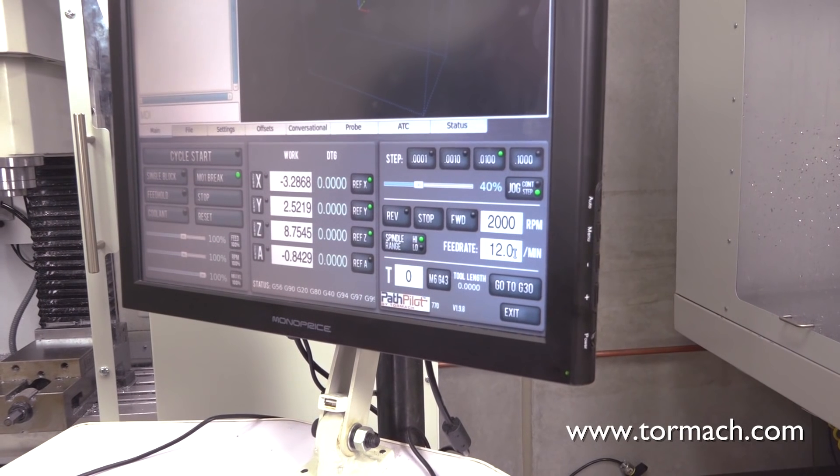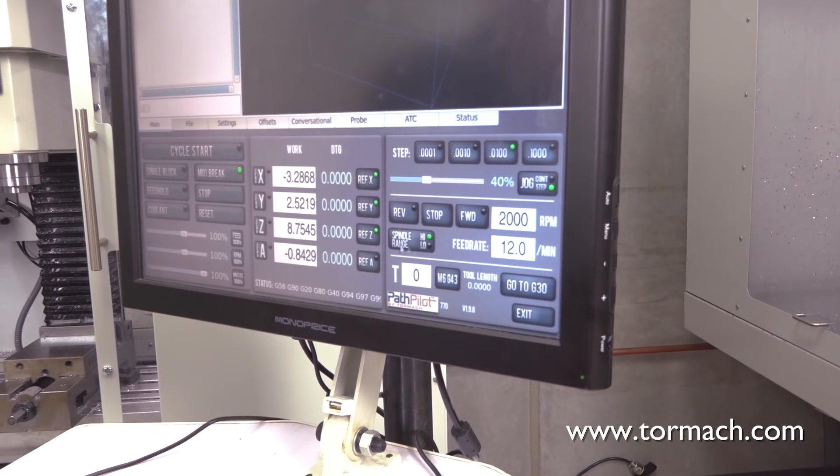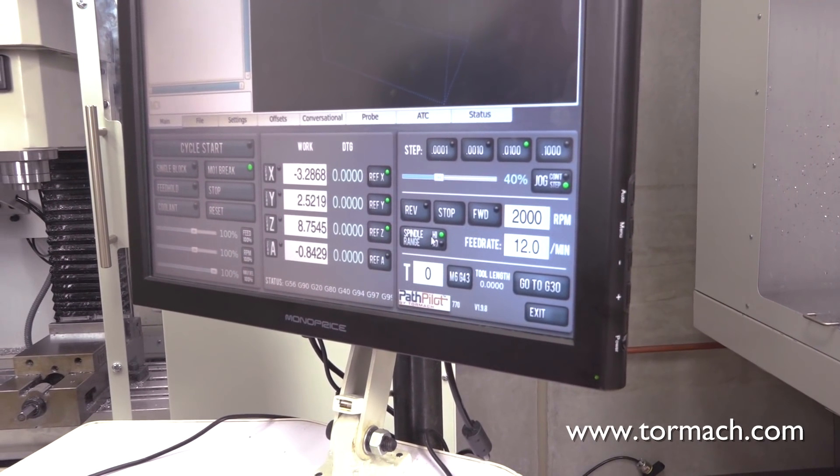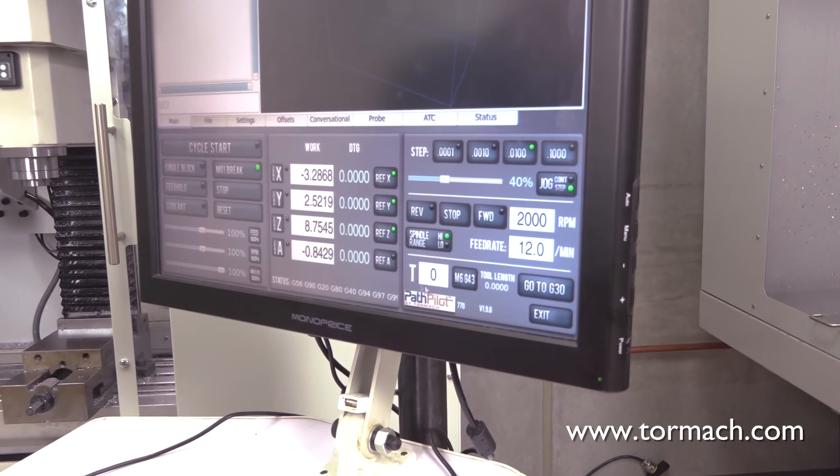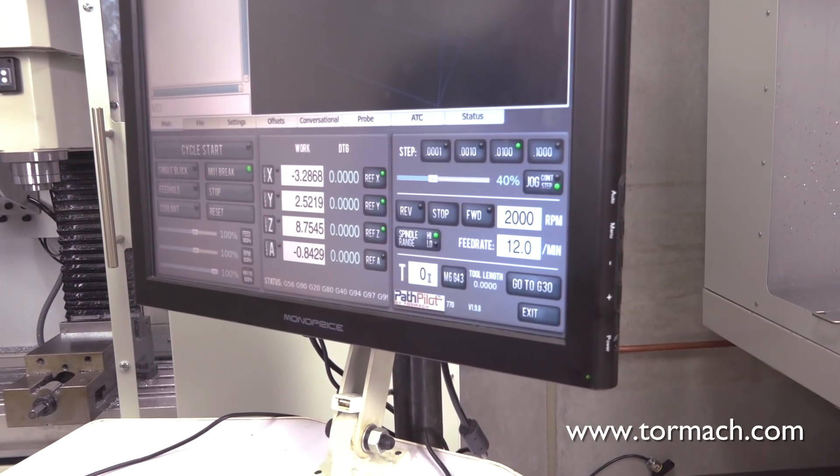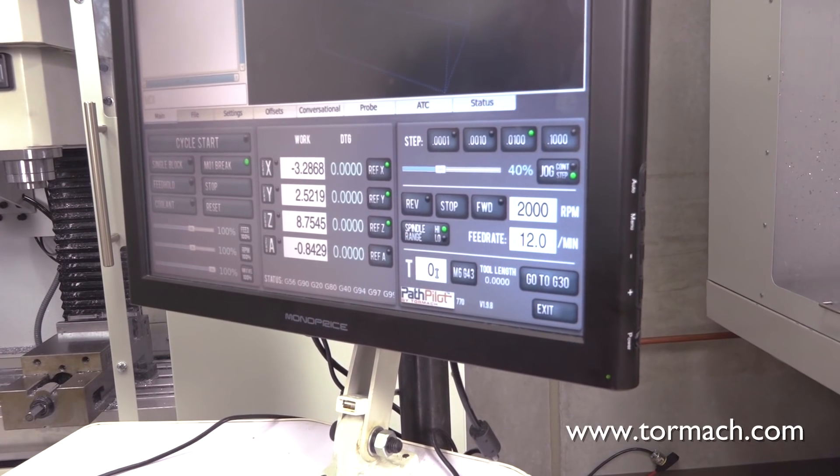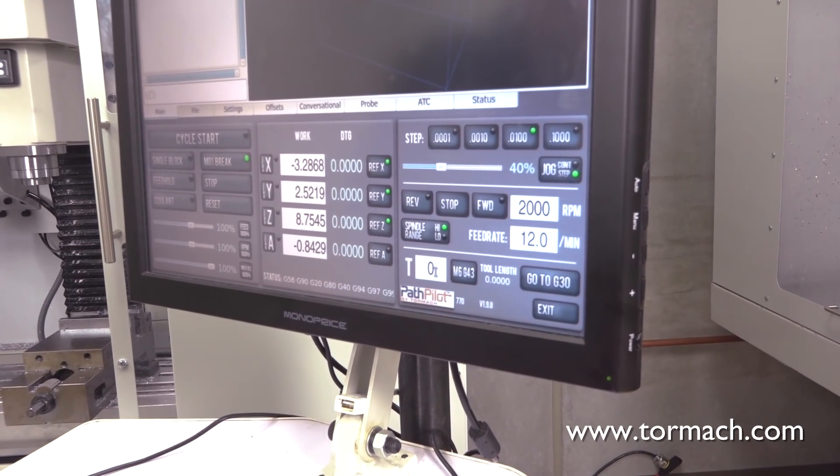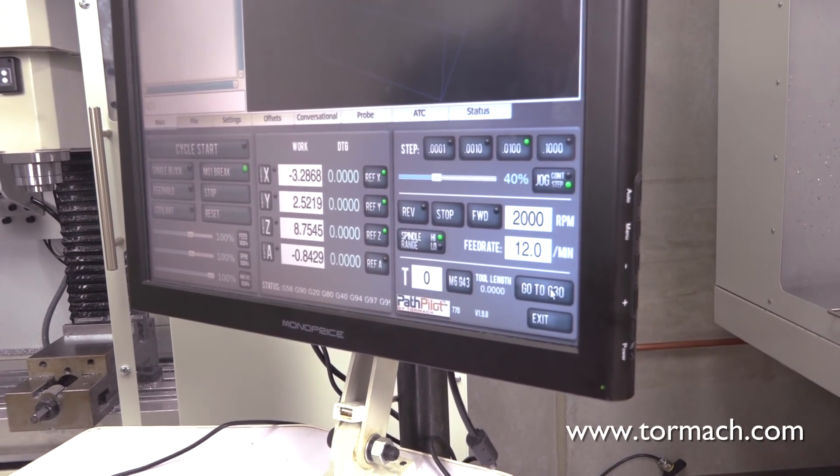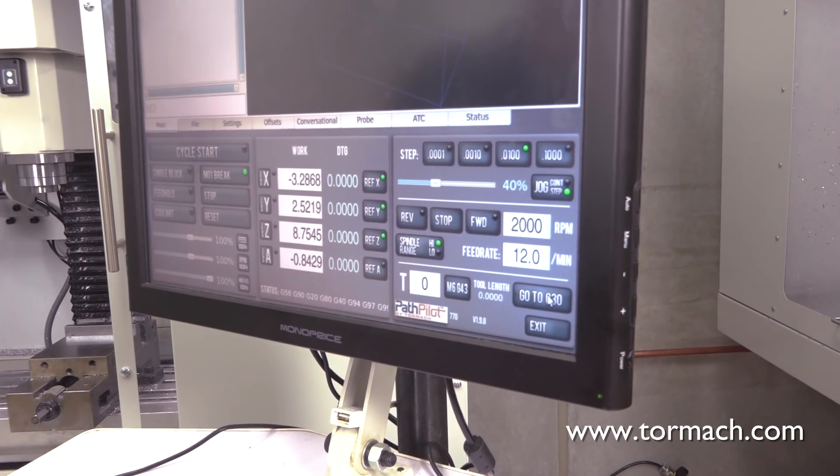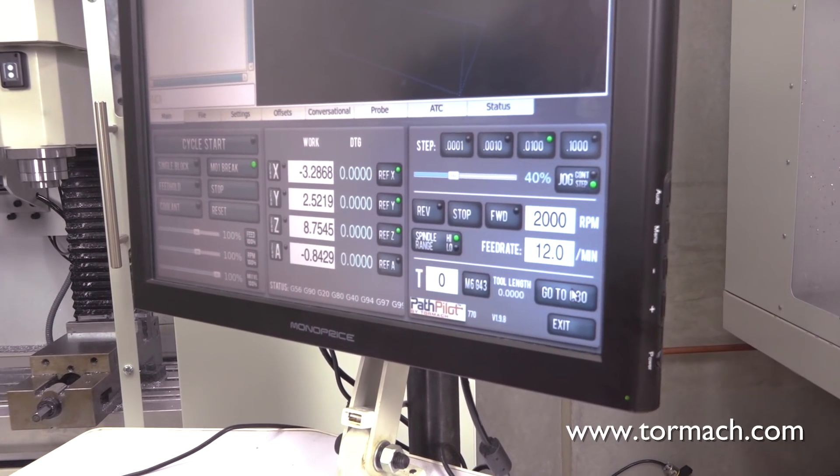And then we have a feed rate DRO. You can change the feed rate. Spindle range is the belt position of the spindle. And at the very end here, we've got the tool DRO. That allows you to, if I had a tool in the machine, I'd type that tool number in. And go to G30. G30 is a position. Typically, we use it for tool change position, but it's an assignable position anywhere.